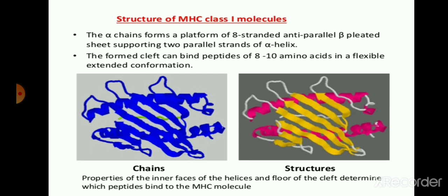This structure can change its shape for the binding of the antigen, changing its size and shape according to the antigen binding. The properties of the inner face of the helix and the floor of the cleft determine which peptide binds to the MHC molecule. The flexibility of this structure depends on the peptide which binds to the MHC molecule — it may be self-peptide or non-self-peptide — and these peptides can determine the flexibility of the class 1 MHC molecules.